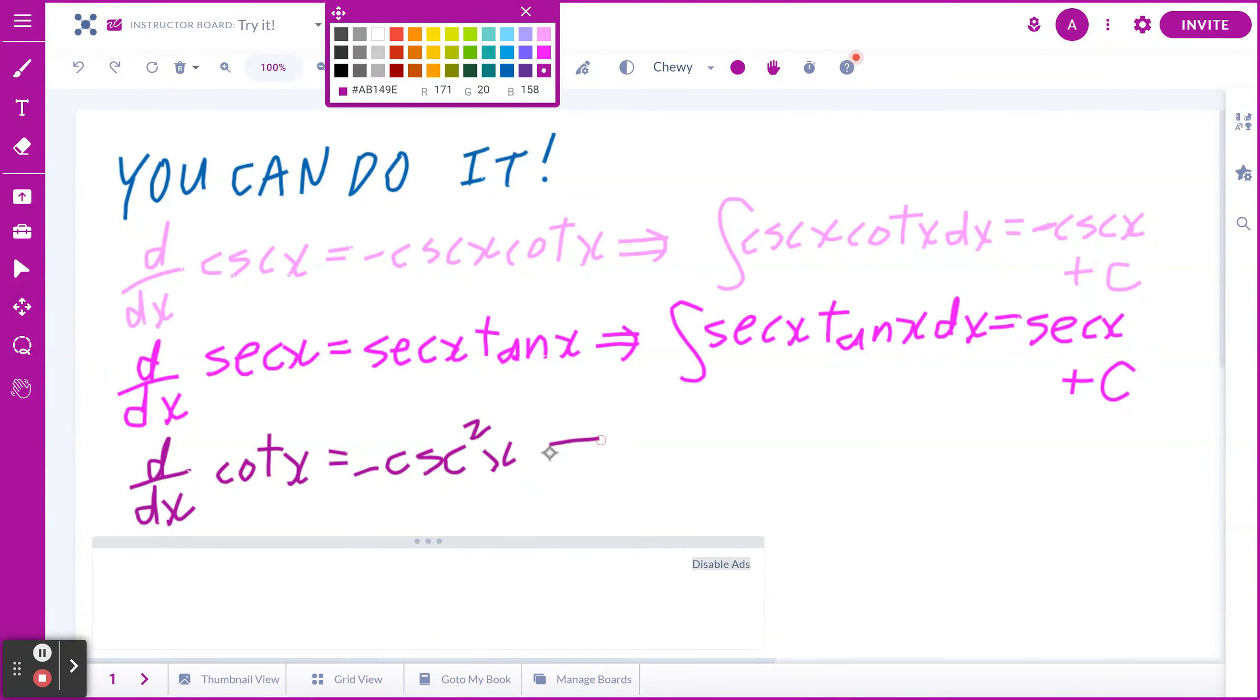Negative cosec squared x. Or if you want to find the anti-derivative of cosec squared x with respect to x, of course this equals negative cotangent x plus C. I hope this makes sense.